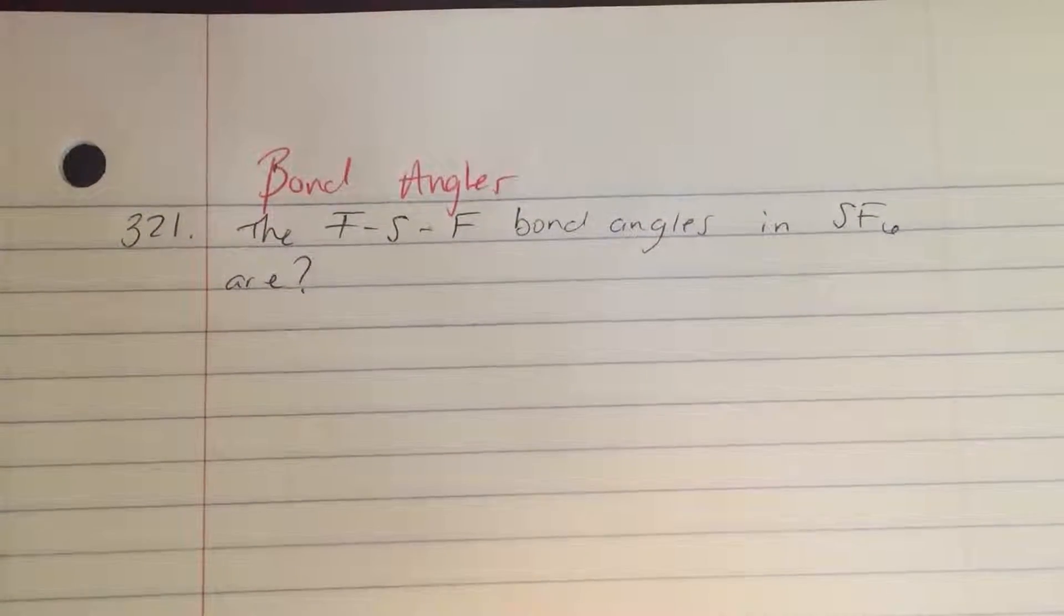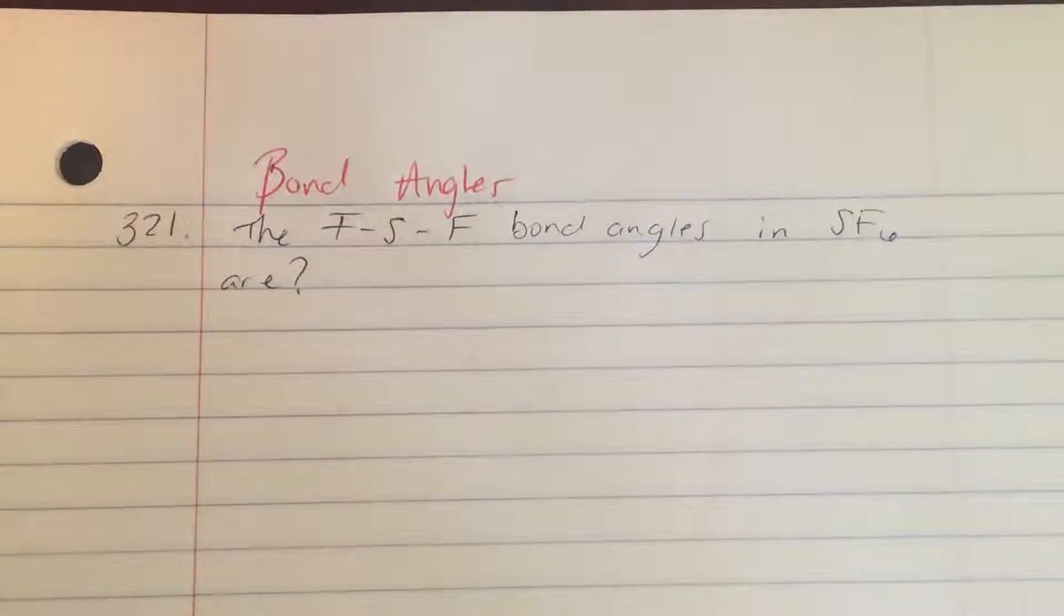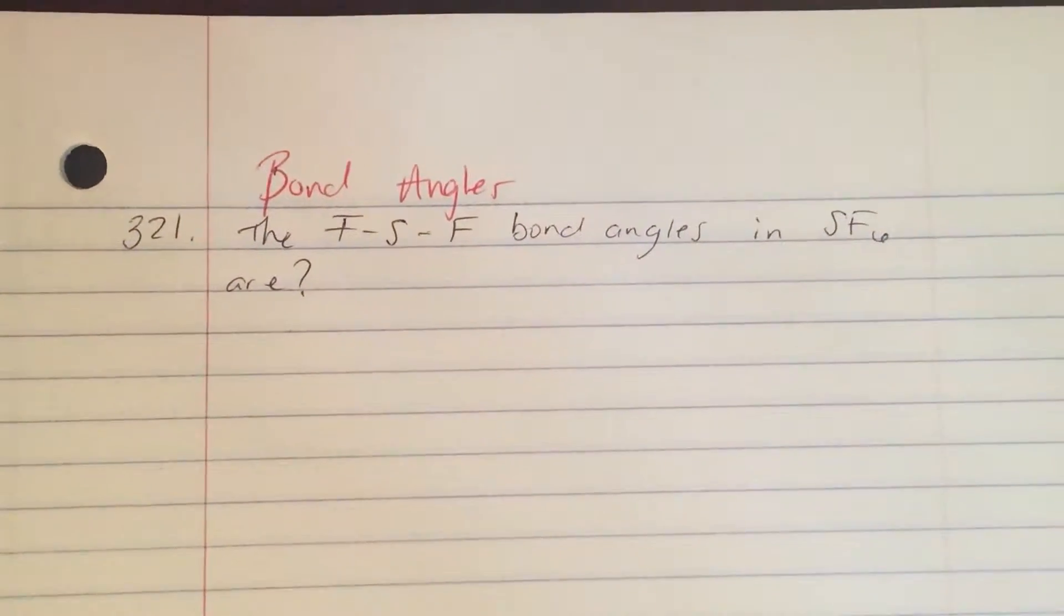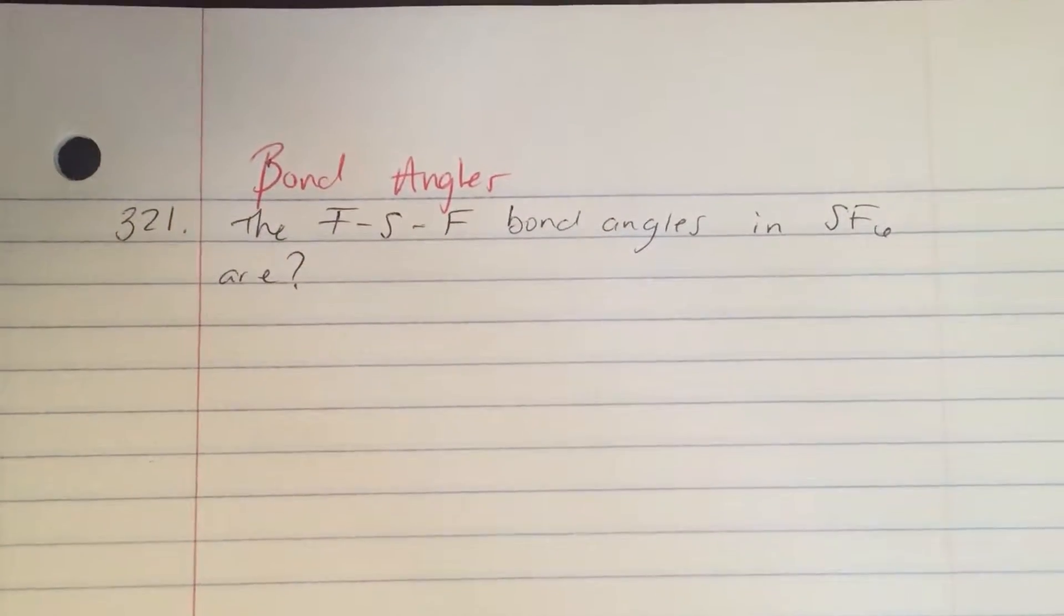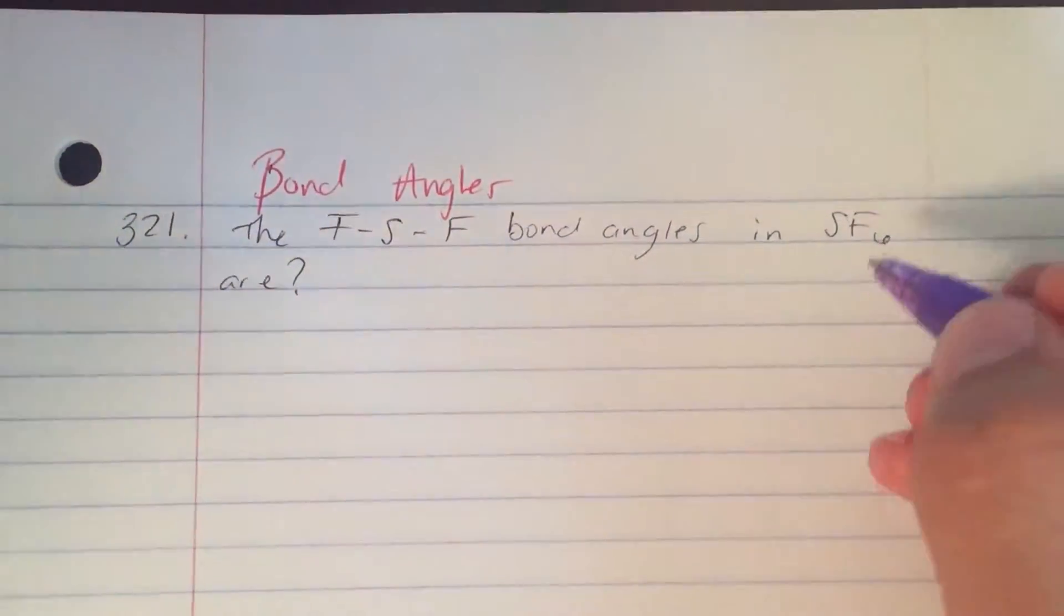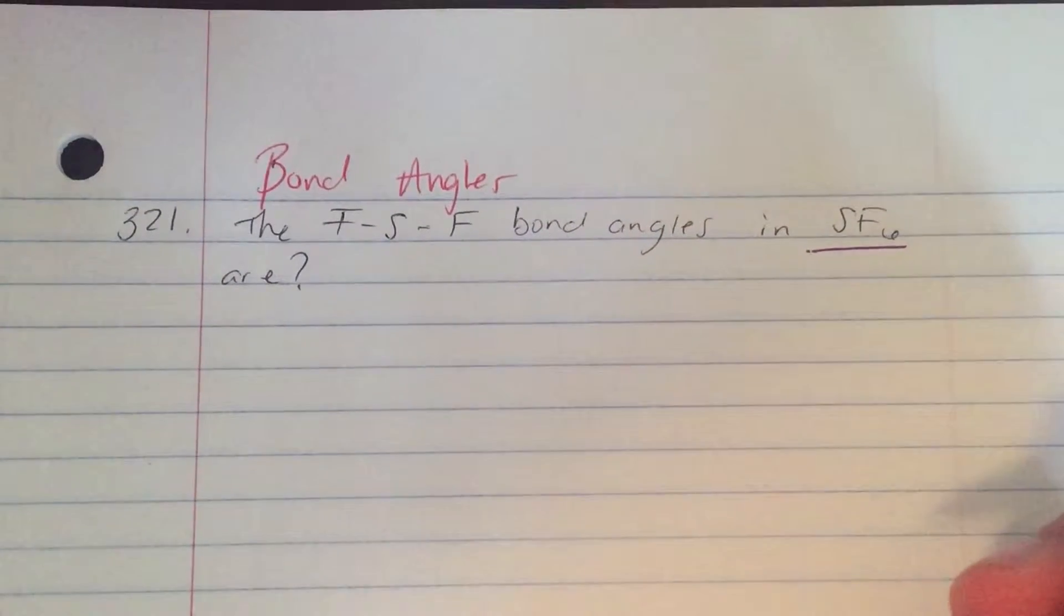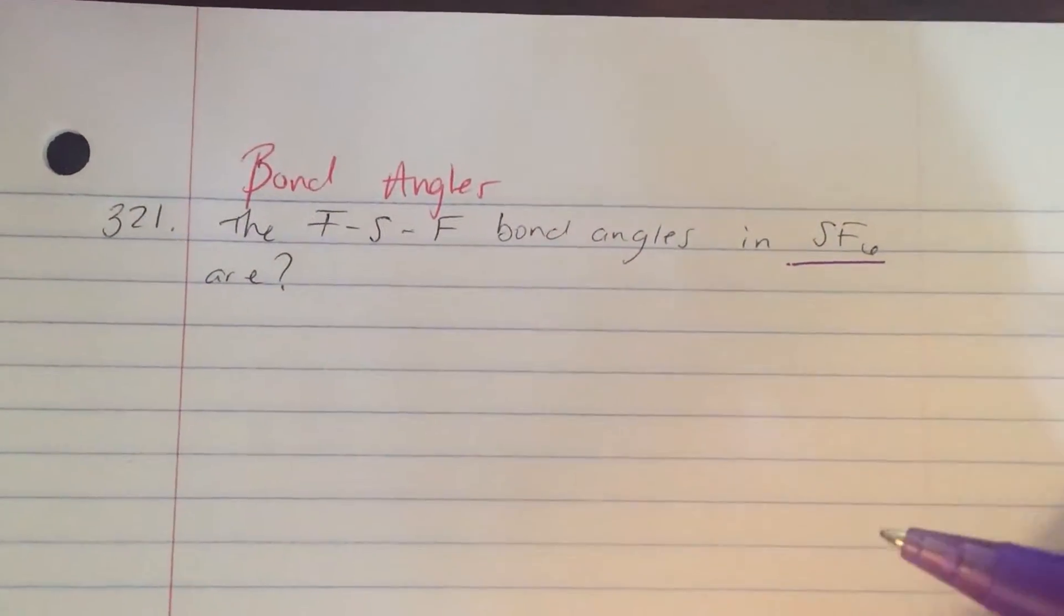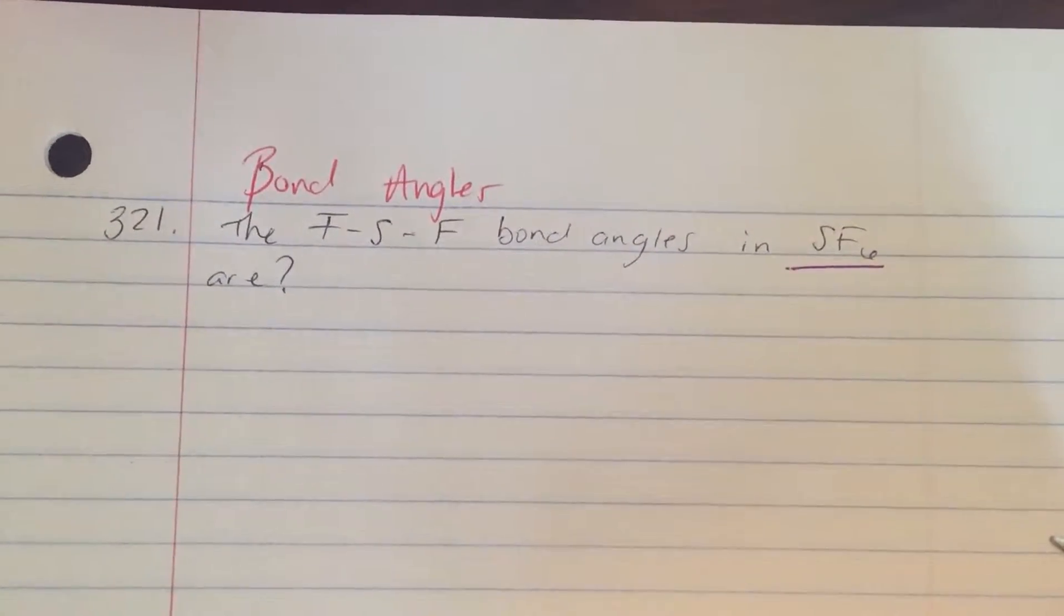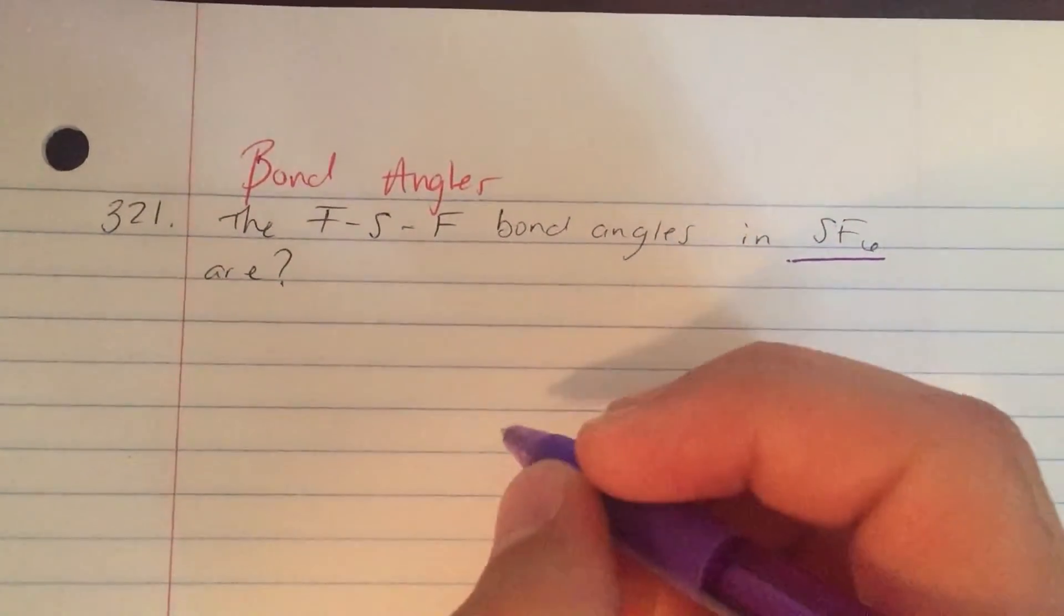Bond angles: the F-S-F bond angles in SF6 are? Okay, first of all, you begin by drawing your structure. SF6. Remember that S has six valence electrons, so it allows for six bonds.